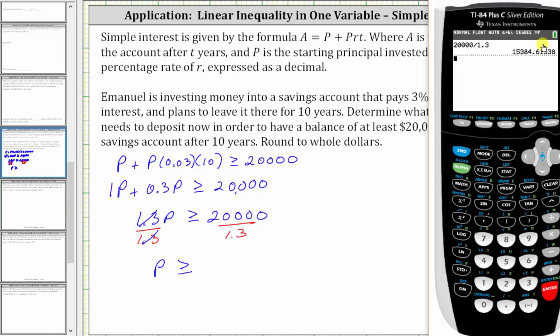I do want to mention, regardless of the digit in the tenths place value, we would always have to round up, because if you round down, then the balance after 10 years would be less than $20,000, not greater than or equal to $20,000.